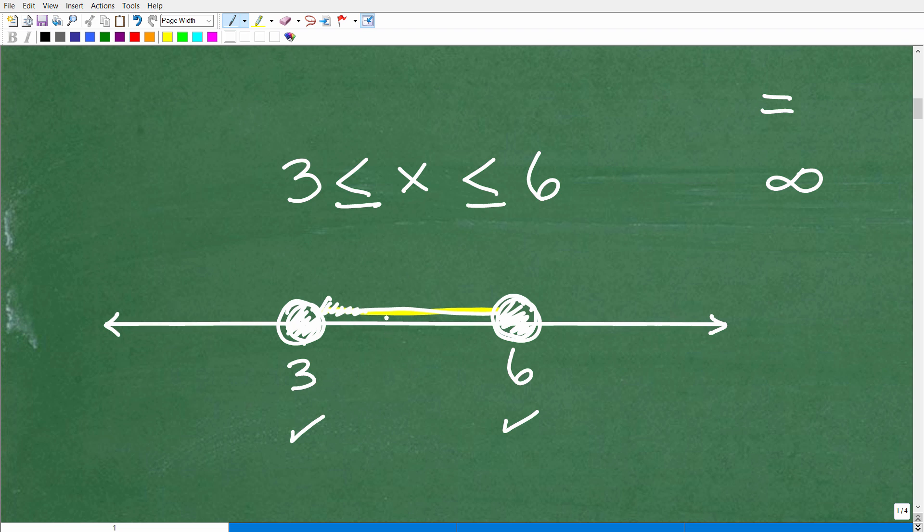But asking yourself how many numbers are between 3 and 6, well, it's not just like there's 4 and there's 5, there's like two numbers. No, there's all the decimal values between these two numbers. These are infinite amount of numbers between here and here. So you might not think that, but that's in fact the case.